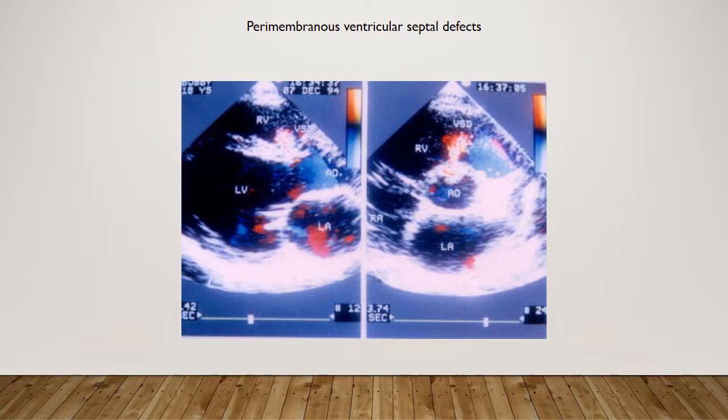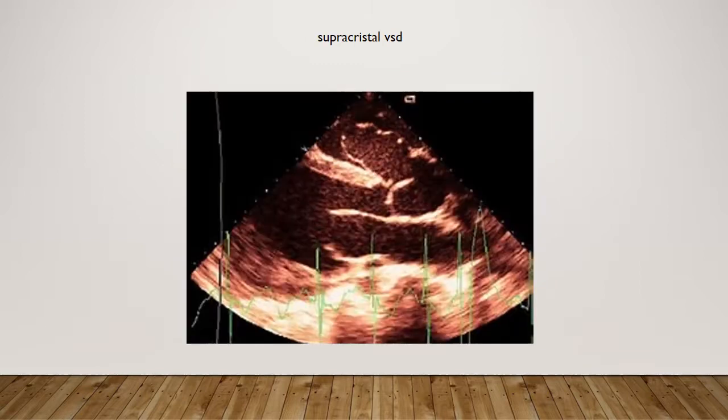Here's a perimembranous VSD. You can see how high it is — right near the aortic valve. The aortic valve looks somewhat abnormal; I think this is a leaflet that's co-apting on itself. The hole is up high. This is something you may watch for a while to see if it closes, but you don't want to wait too long, because if the aortic valve starts leaking, you've got more problems.